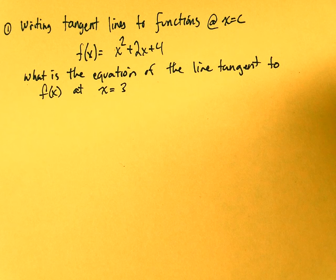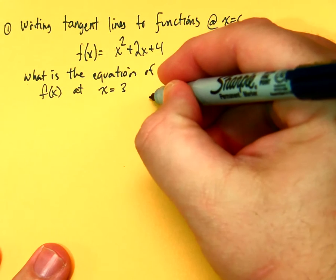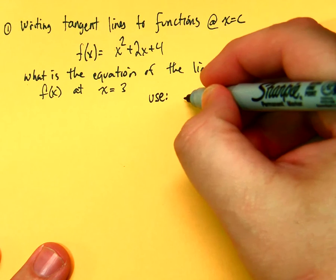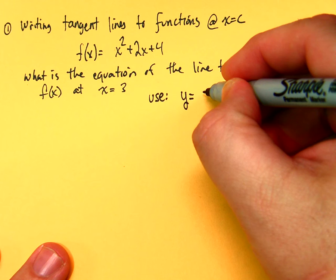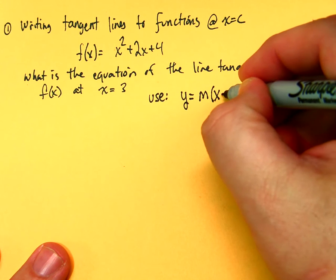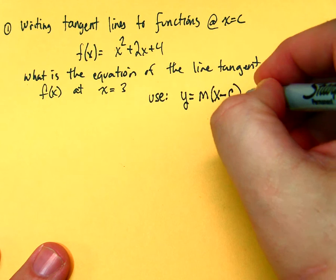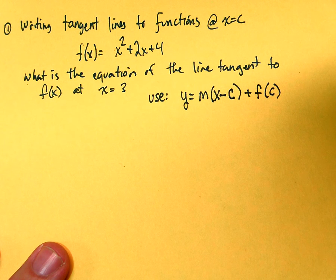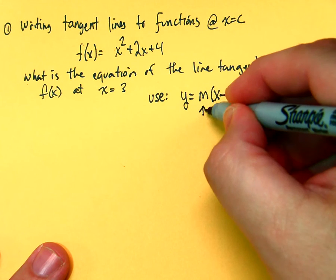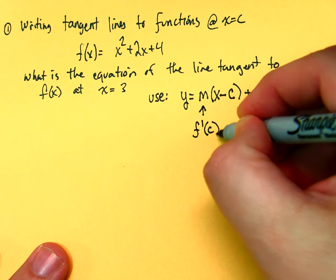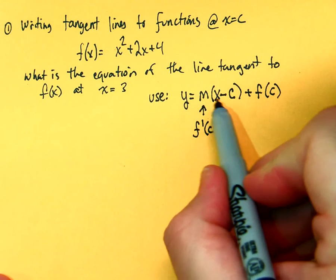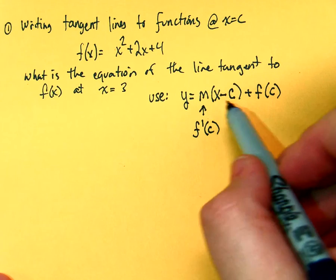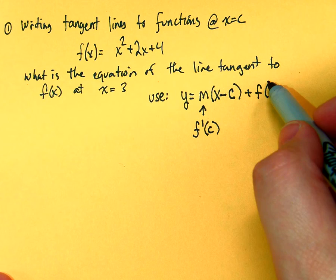So, what we're going to do is we need to figure out the equation of the tangent line at this point. And, we're going to use the following equation: y is equal to m times x minus c plus f of c. Where m is actually f prime at c. Now, this equation is your point slope equation: y equals m times x minus x sub 1 plus y sub 1.